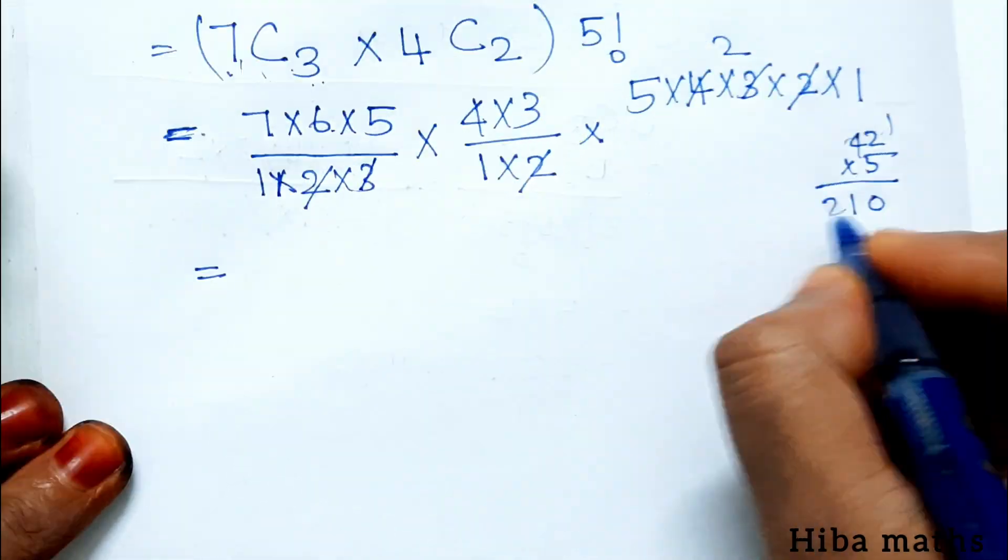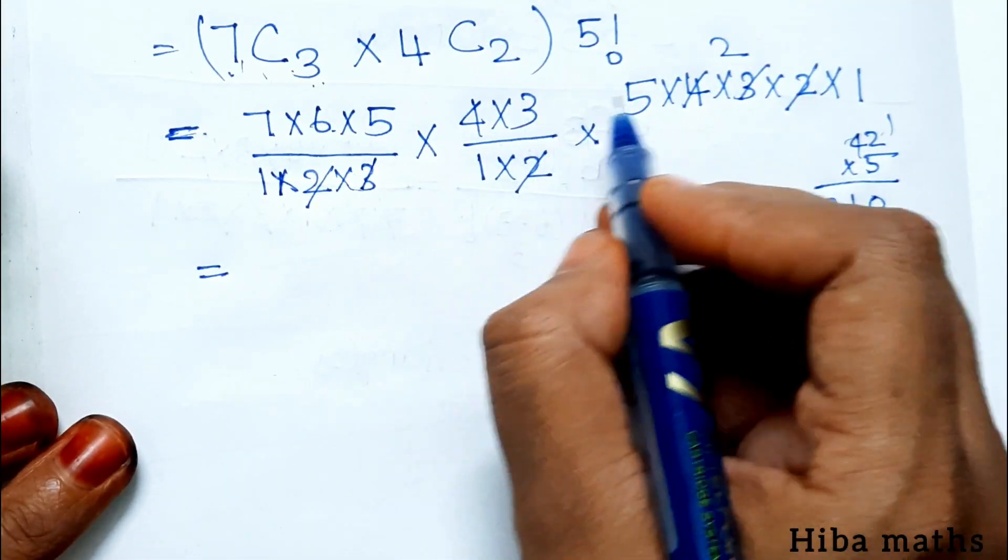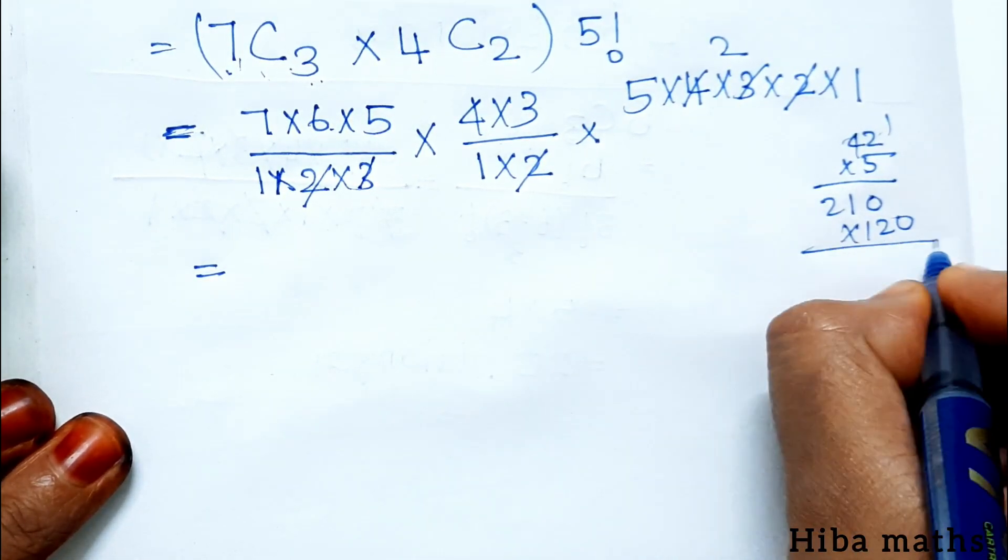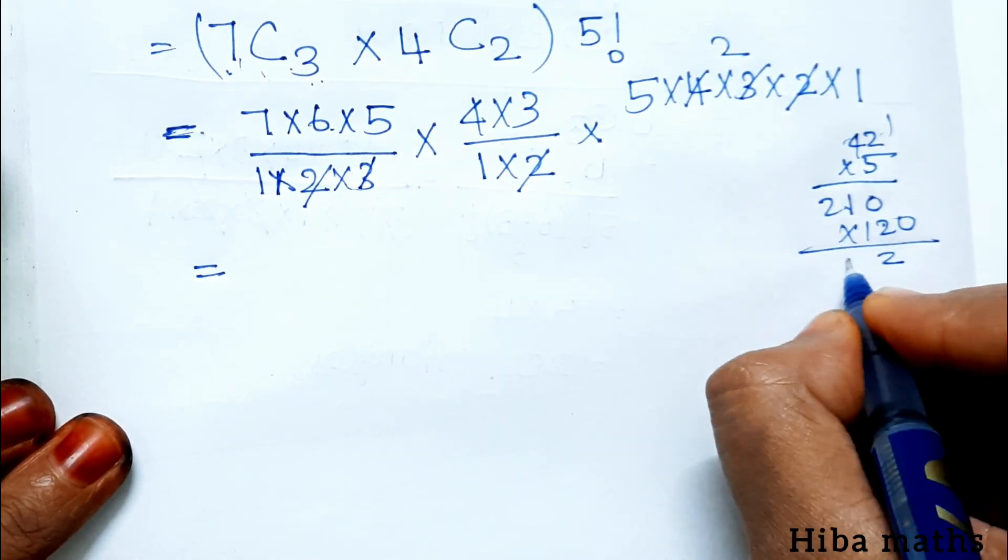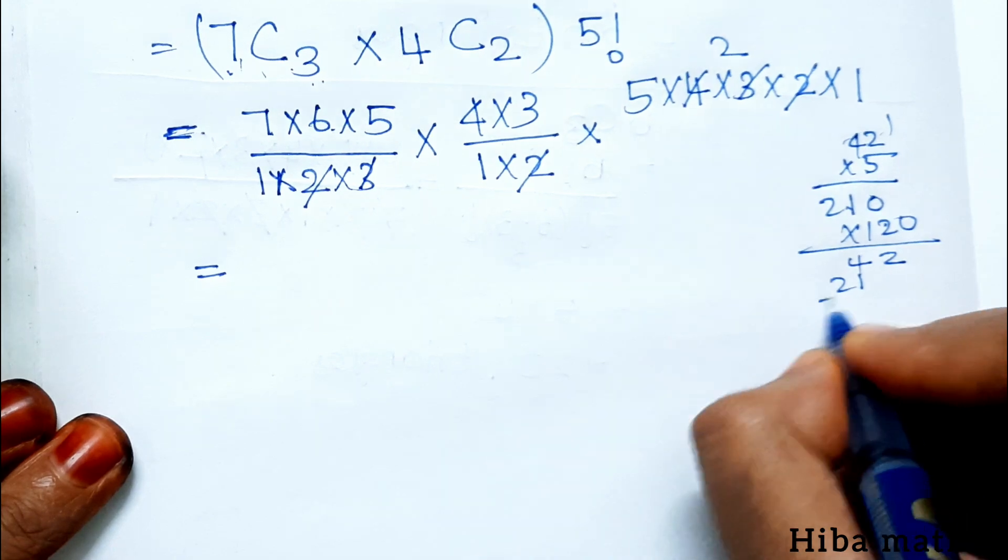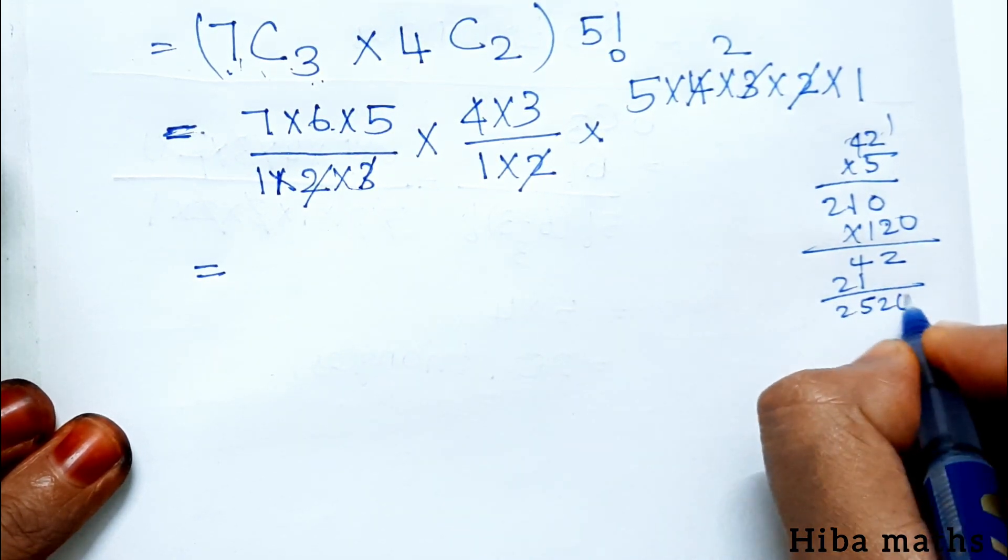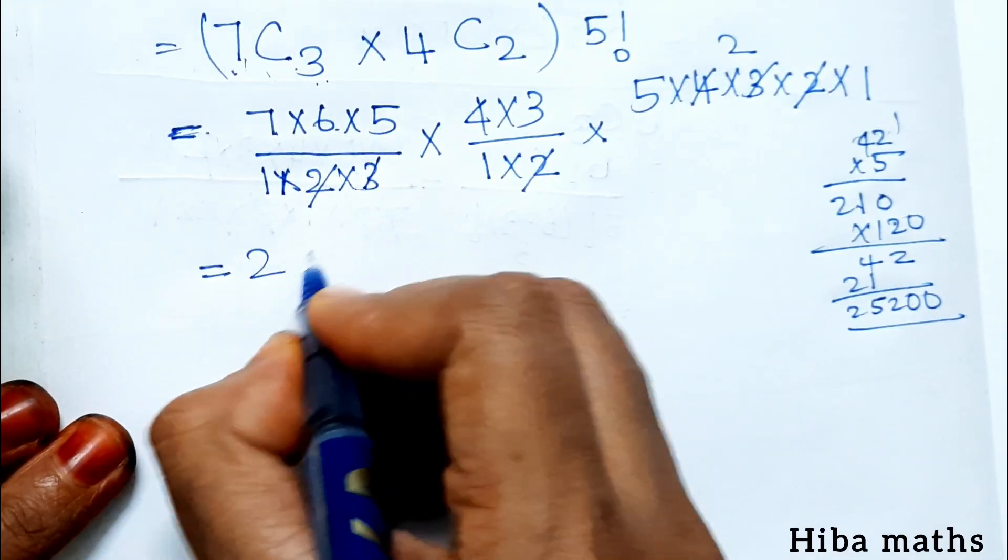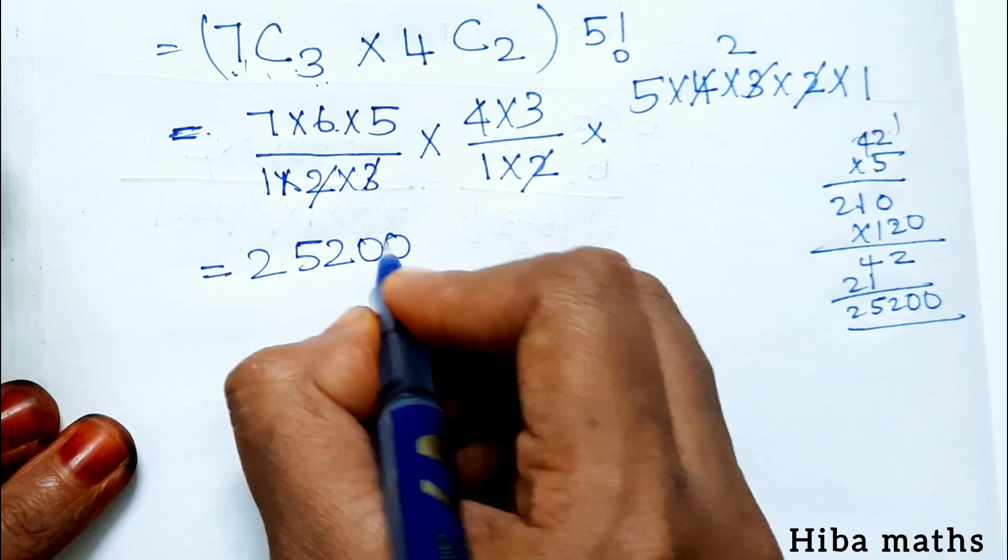4 threes are 12, 12 tens are 120. 120, 2 ones are 2, 2 twos are 4, 1, 2, 2, 5, 2, and the end is 0. So answer is 25,200.